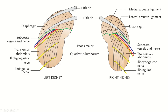This is the posterior surface of the kidney. This is the left kidney and this is the right kidney. The left kidney is slightly higher than the right kidney. The right kidney is lower due to the large right lobe of the liver.